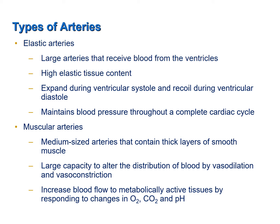For example, if one begins to exercise where skeletal muscles are consuming a large amount of glucose and producing a large amount of carbon dioxide and organic acids — which drops the pH around and in the skeletal muscles — these changes in oxygen, carbon dioxide, and pH cause relaxation of the smooth muscles in the supplying muscular arteries. The result is an increase in blood flow to those metabolically active organs that need oxygen and nutrients the most.